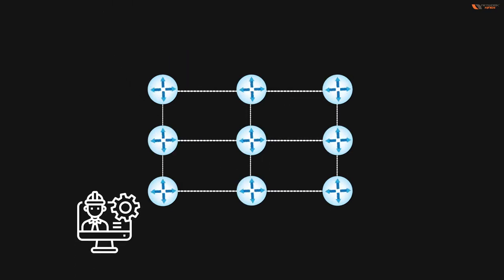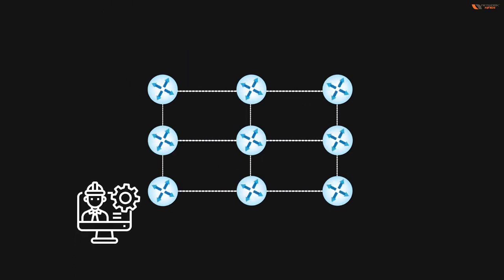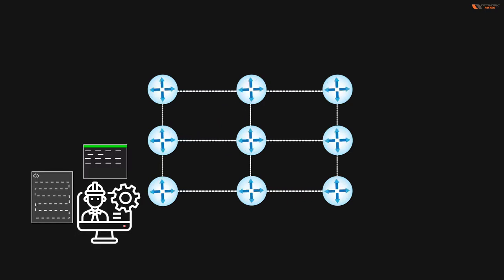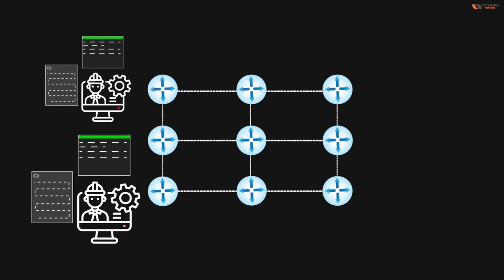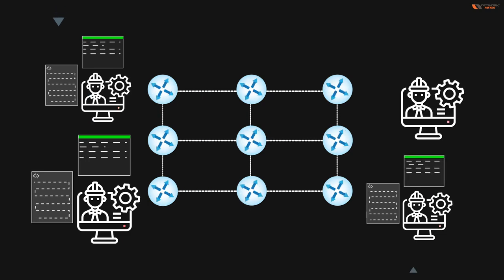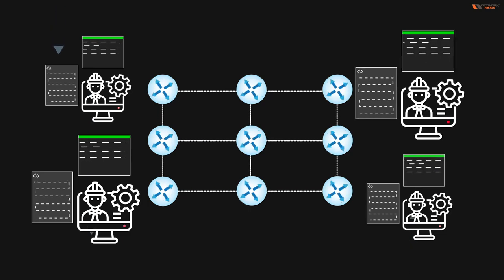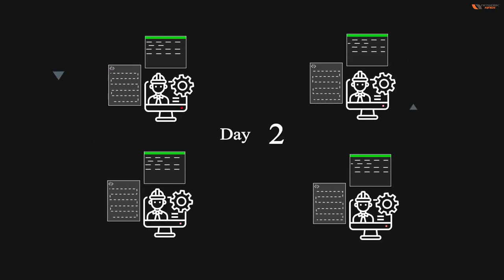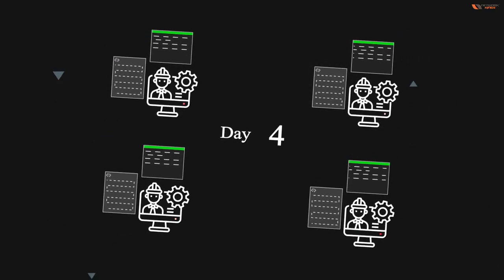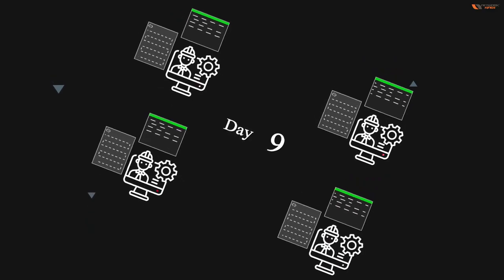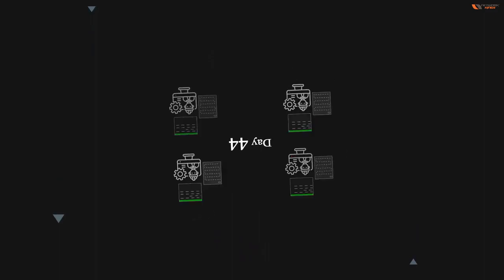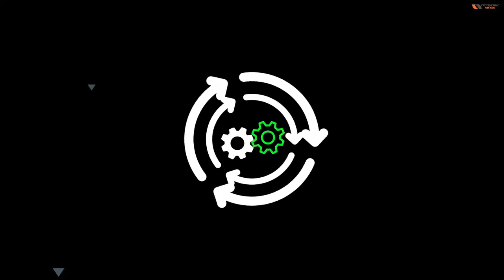What network engineers are doing daily — either checking logs or doing some configuration — most of it is not productive. Whatever work they are doing right now, these are all repetitive tasks. So we need to eliminate these repetitive tasks. This is the core problem that network automation aims to solve.